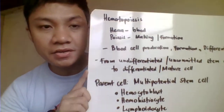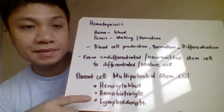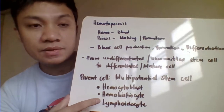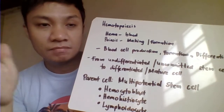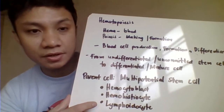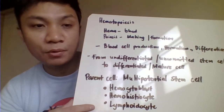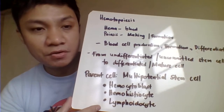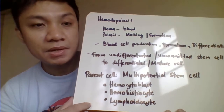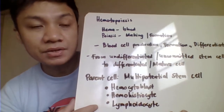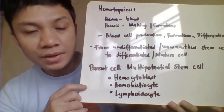Hematopoiesis comes from the words 'hema' meaning blood and 'poiesis' meaning making or production. So hematopoiesis is simply the process of blood cell production, formation, and eventually differentiation to become mature blood cells found in our peripheral circulation. The entire process from the production of cells in your bone marrow until they become mature cells and are released to your peripheral circulation is called hematopoiesis.